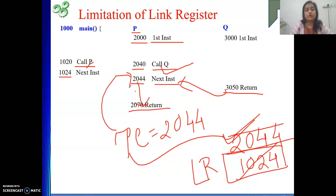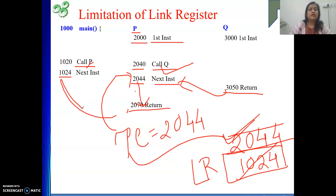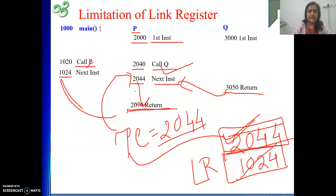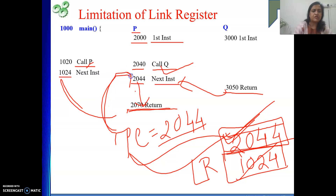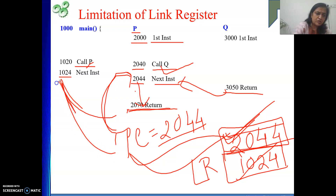At some point there is a return instruction in P. When we execute this return instruction, we again take the link register value and give it to PC. That value is still 2044. So again we go to the same instruction inside P — whereas we should go back to our caller, which was main, at address 1024. But we are returning to 2044, not 1024. So that is the problem.